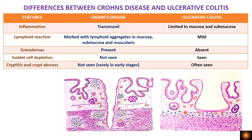Goblet cell depletion is typically seen in ulcerative colitis in the mucosal lining cells but not in Crohn's disease. Cryptitis and crypt abscesses are diagnostic features of ulcerative colitis. They can be seen in Crohn's disease in early stages, but in later stages they are not found, so they are very rare in Crohn's.